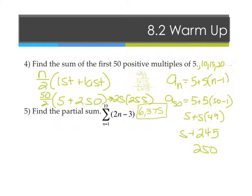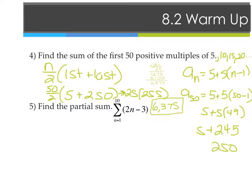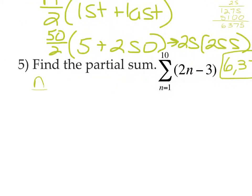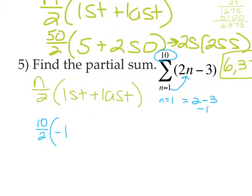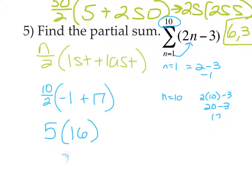And then the last one says find the partial sum. So now we're writing in terms of sigma or in terms of summation notation. It's still n over 2 times first plus last. But this time I've got to figure out the first and the last and the number of terms. If the number on the bottom was 1, what did we say the n was? The number on the top. So this time it's 10. And then I need to find if n is 1. So if n equals 1, then it's 2 minus 3, which is negative 1. That's my first. And then I need to find where n is 10. So 2 times 10 minus 3 is 20 minus 3, which is 17. And that's the last. So I'd get 5 times 16, which is 80.